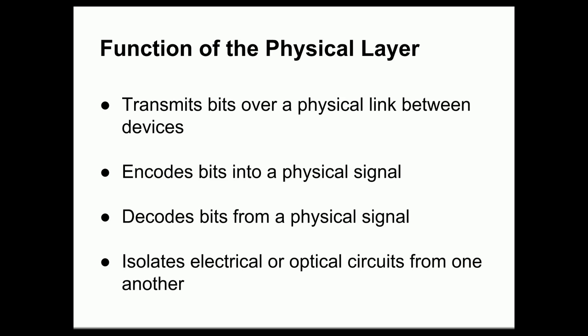It's also important for the physical layer to isolate different electrical or optical circuits from one another. In the case of an electrical circuit, such as with an Ethernet network, a malfunctioning device on one part of the network should not be able to bring the entire network down via a short circuit or other electrical malfunction. So the physical layer also needs to perform what's called galvanic isolation, keeping different circuits isolated from each other.